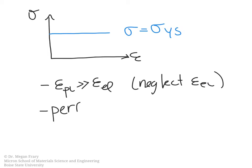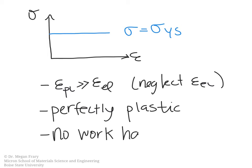So essentially in this model we neglect the elastic strain altogether. This system is what we would call perfectly plastic. And in this model there's actually no work hardening, because the flow stress is not going up at all as deformation occurs. This is our simplest model, the perfectly plastic model.